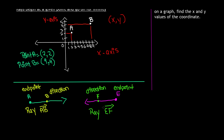So remember: the given point is going to be called the end point. The point that comes in between, or in which the ray is headed, is called the direction. When you write it out, you write ray, then your end point, then your direction right next to each other, and the ray symbol on top is always headed right.